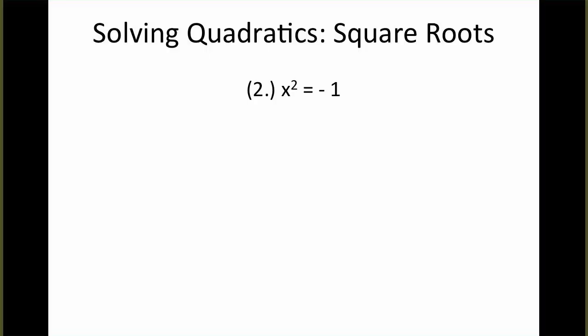Now, here we also have a very basic example because we just have x squared is equal to a number again. But notice in this case that x squared is equal to a negative value. We know that whenever we square a number, it will give you a positive value, but that only is the case if we're dealing with real numbers. So here, whenever we take the square root of a negative, we will end up with a complex number solution.